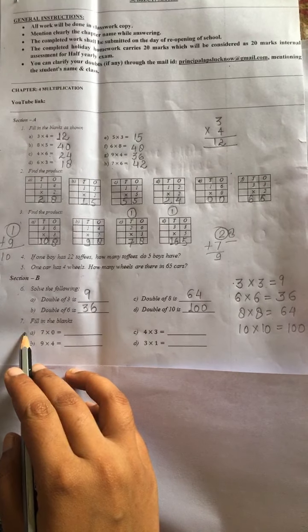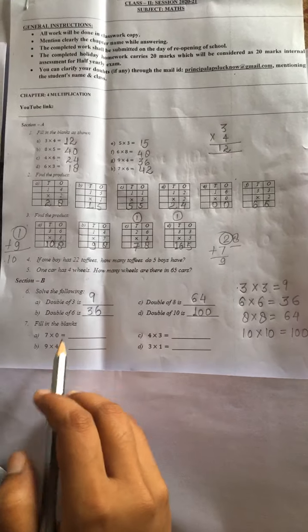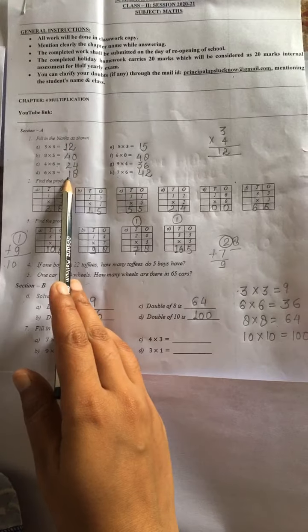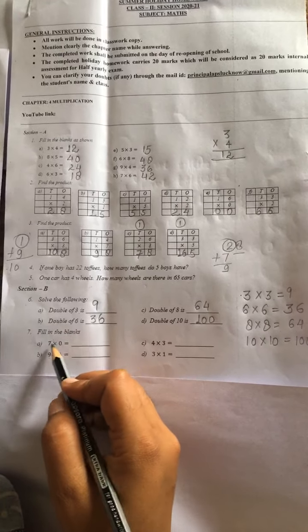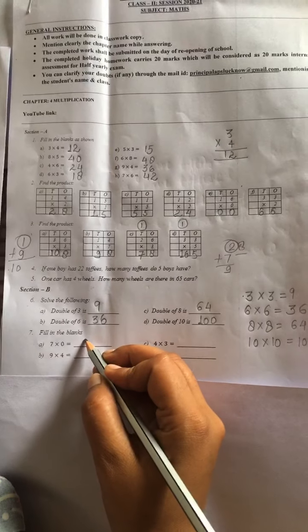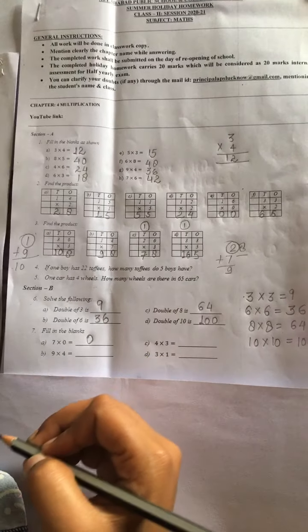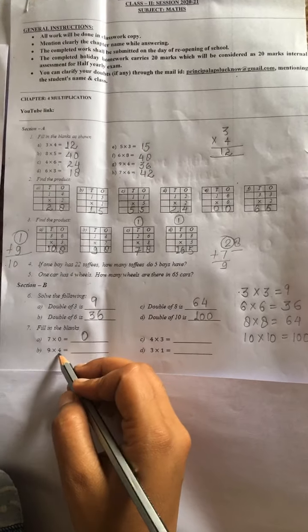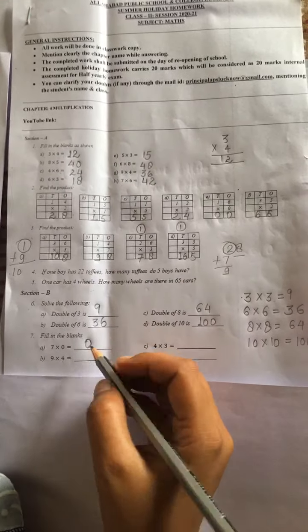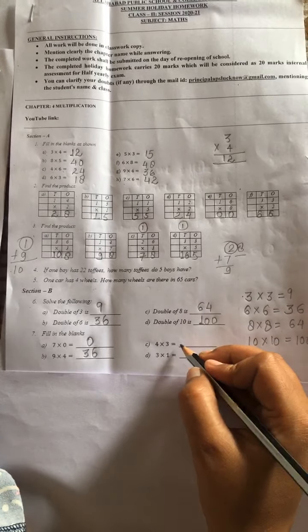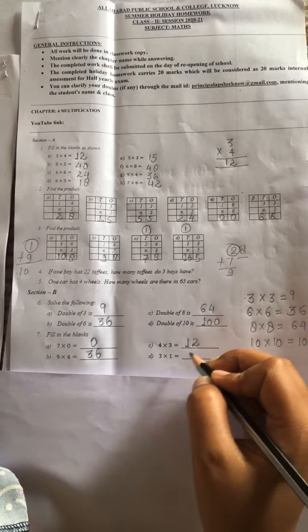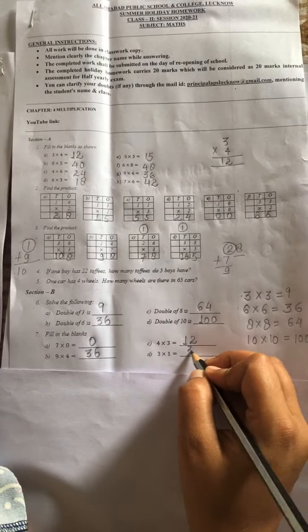Question number 7. Fill in the blanks. This is similar to the question number 1. Maine bataya tha, zero ka kisi bhi digit mein multiply karenge, kya aayega? Zero. 9 times 4, idhar dekho, maine dekha tha, 9 times 4 is 36. 4 times 3 is 12. And 3 times 1 is 3.